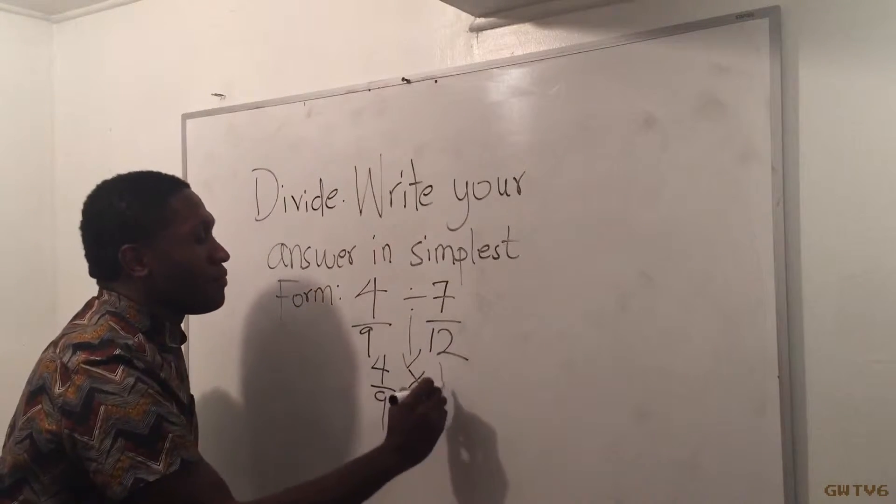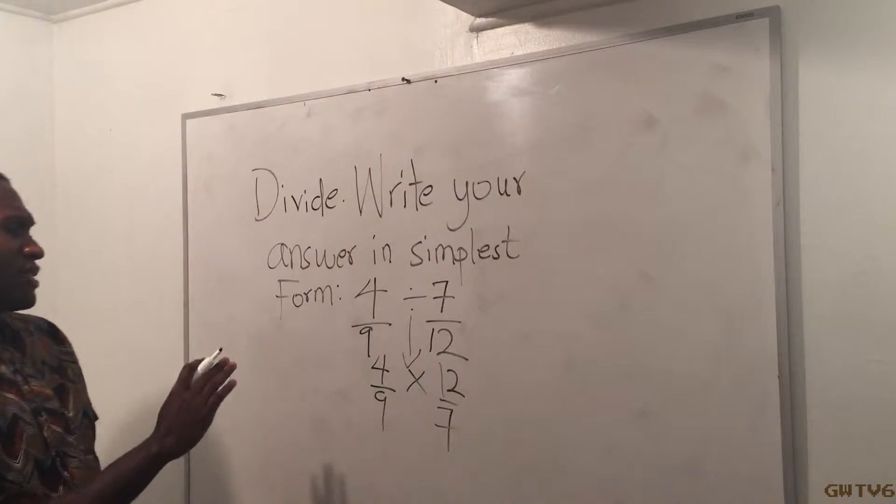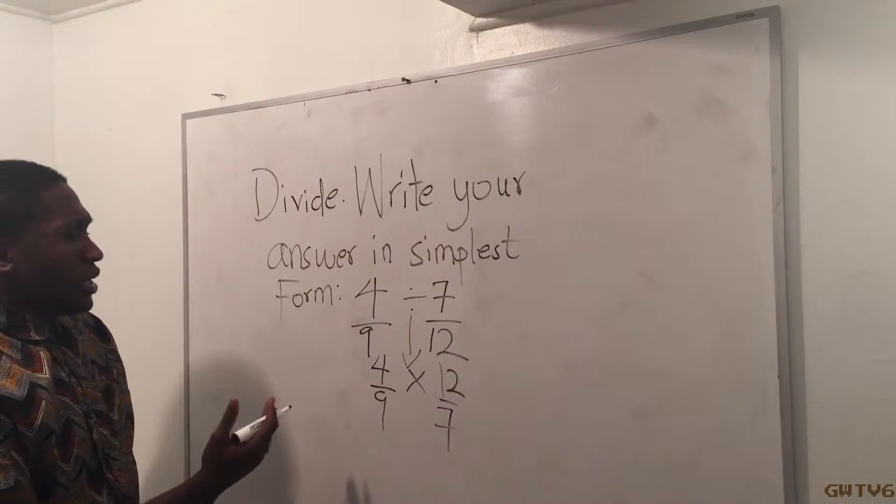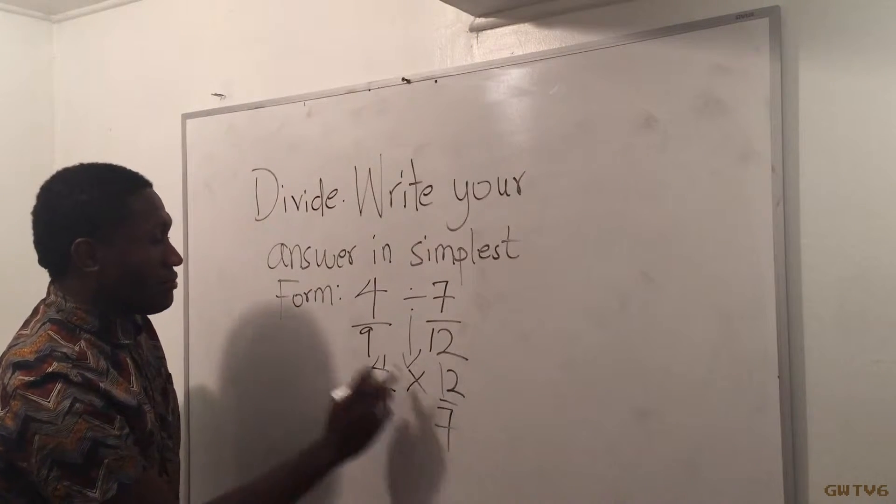So the reciprocal of this one, the 12 goes up and this 7 will come down. And I have to simplify that. When it comes to simplifying, I can cancel like that or cancel that way.